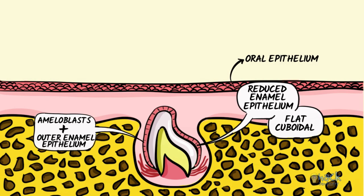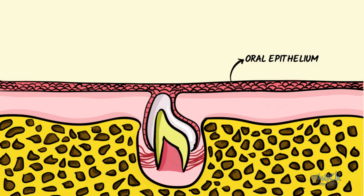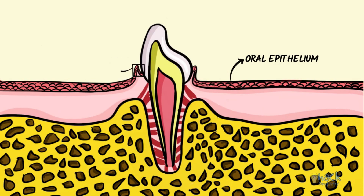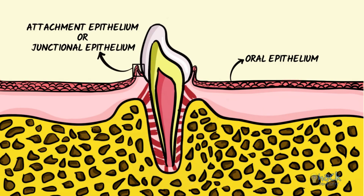As the tooth starts to move upward and erupts through the oral mucosa, the reduced enamel epithelium fuses with the overlying epithelium to form the junctional epithelium, or the attachment epithelium.